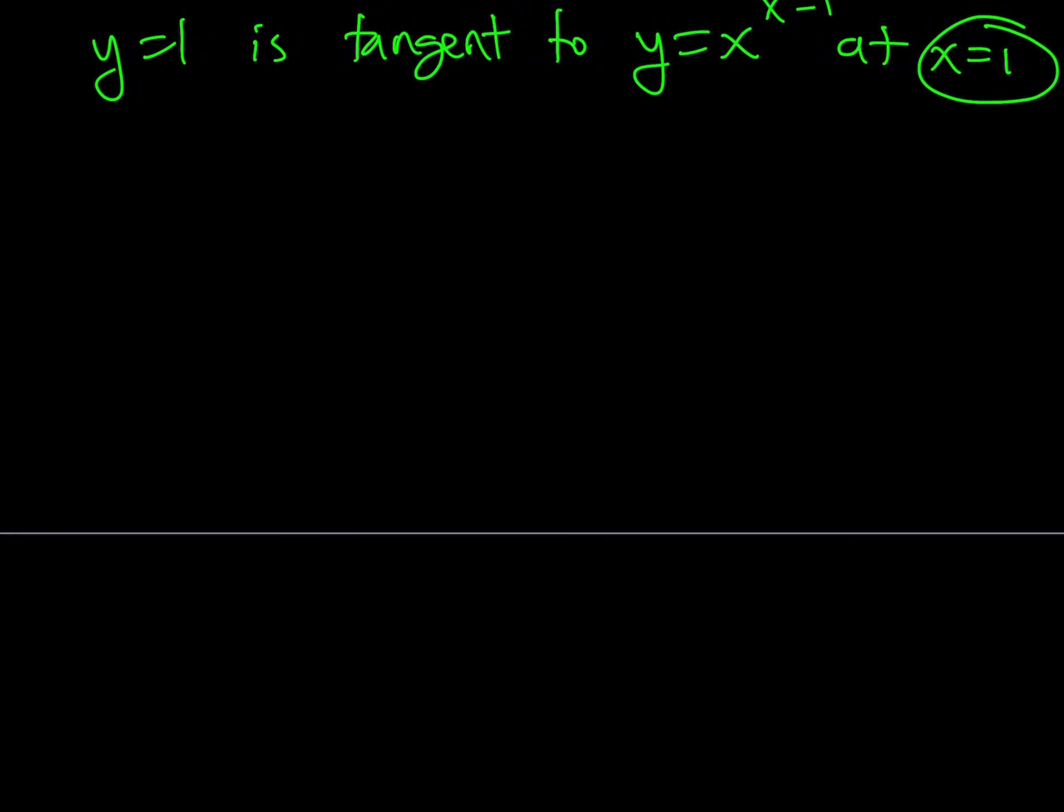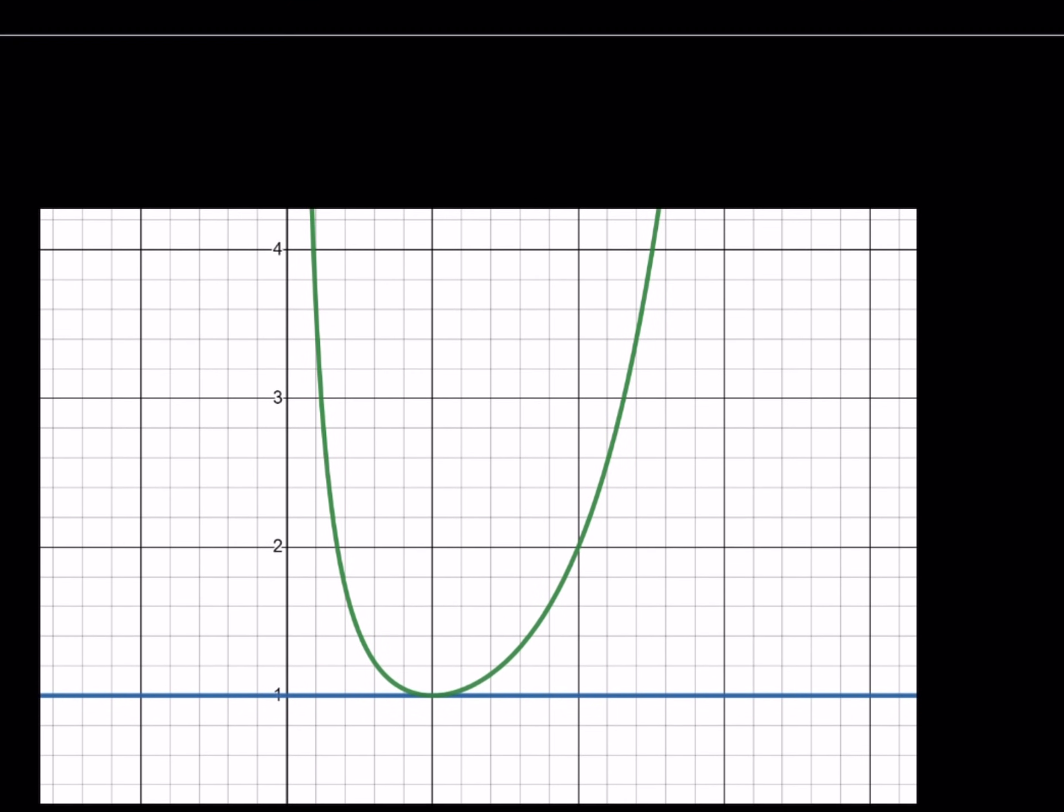And I want to show you graphically what this looks like. So let's go ahead and take a look at the graph of these two functions. So now I have the following. I have y equals x to the power x minus 1, and notice that we're talking about 0 to 1. I mean, sorry, x values need to be positive. Obviously, x can go to infinity.